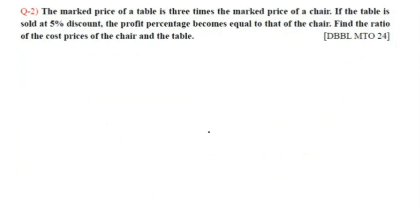Question number two: The marked price of a table is three times the marked price of a chair. If the table is sold at a 5% discount, the profit percentage becomes equal to that of the chair. Find the ratio of the cost prices of the chair and the table.